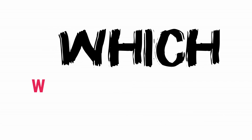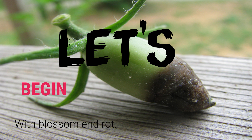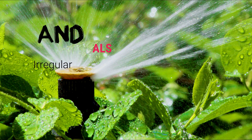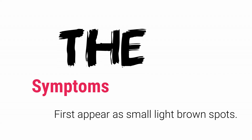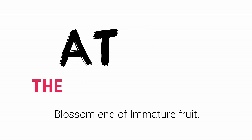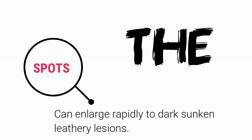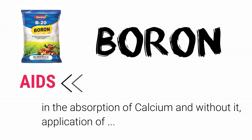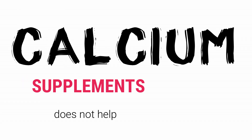Now to the unique causes which will help you to further diagnose the problem. Let's begin with blossom end rot. Blossom end rot is a condition resulting from low calcium levels and also irregular watering of fruiting crops. The symptoms first appear as small light brown spots at the blossom end of immature fruit, and the spots can enlarge rapidly to dark sunken leathery lesions. Inadequacy of calcium may also result from low levels of boron in the nutrients fed to the crops. Boron aids in the absorption of calcium, and without it, application of calcium supplements does not help the situation.